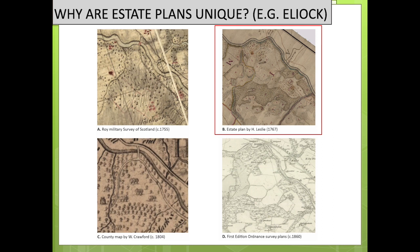Putting together all these estate maps, we can really have an insight into how the woodland cover looked before the 1860s. It's a unique source of information because we don't have any direct evidence of woodland cover before the first OS map survey. They also provide information about what type of plantation or management was applied to the woodlands.